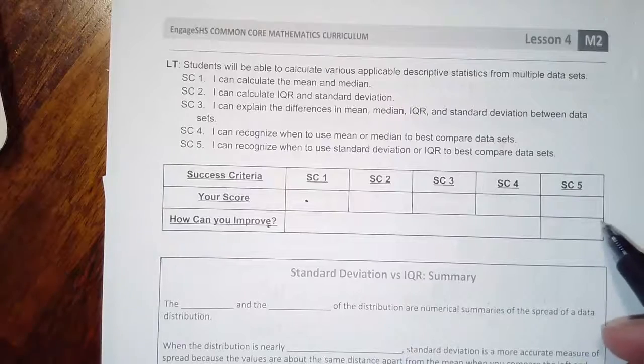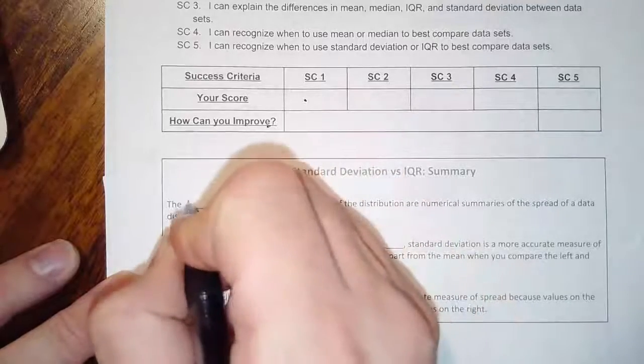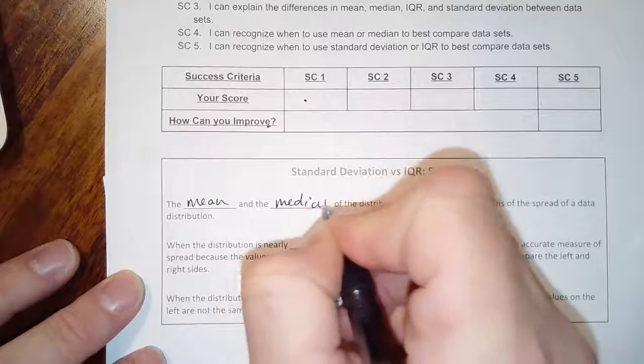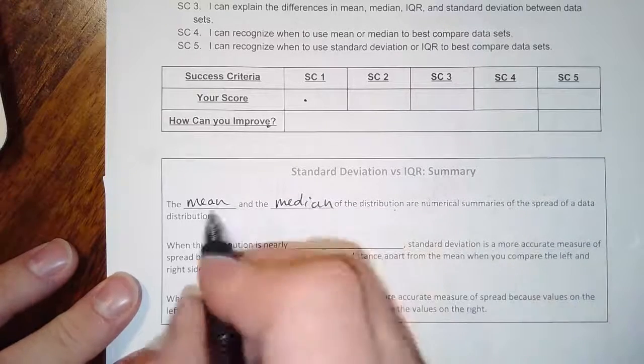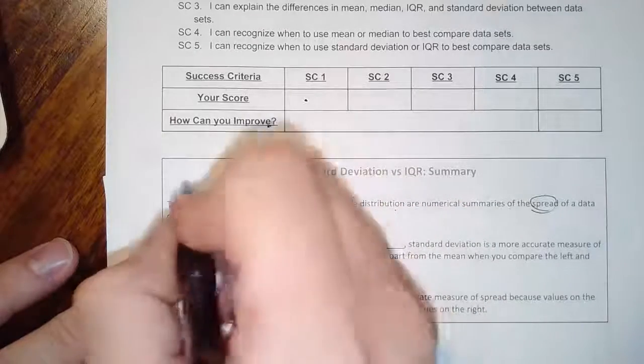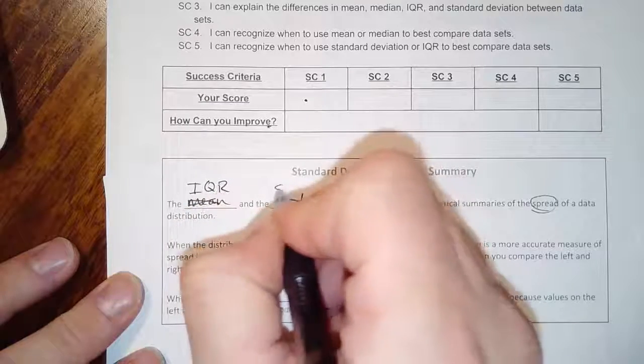The mean and the median, this looks familiar. Let's see if we can use numerical summaries. Wait a minute, I used the wrong words and I fooled you. I fooled myself. I didn't read this word right here: spread. Mean, IQR, and standard deviations. When the distribution is nearly symmetric.